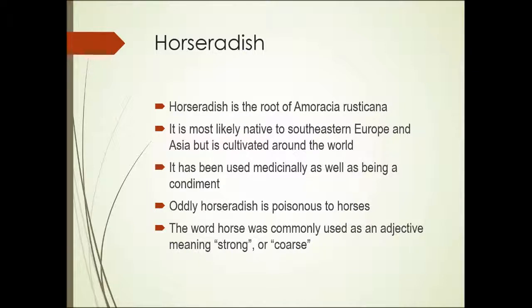Horseradish is the root of a plant called Armoracia rusticana. The origins of this plant are uncertain, but it is most likely native to southeastern Europe and Asia, and it is cultivated around the world today. It has been used medicinally as well as a condiment — notice this is a plant used medicinally but does not have the specific epithet officinalis, which is common. Oddly, horseradish is poisonous to horses, but at the time the common name came into use, 'horse' was commonly used as an adjective meaning strong or coarse — and 'rusticana' fits that same terminology.